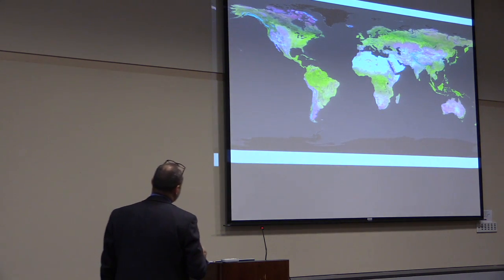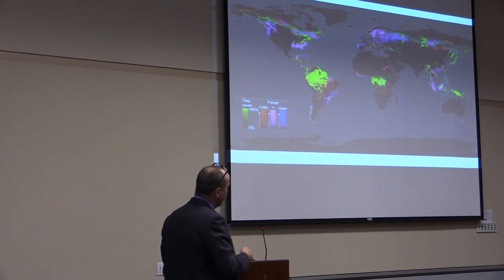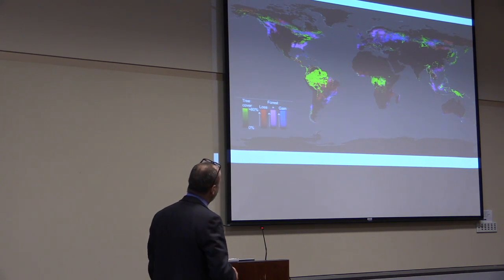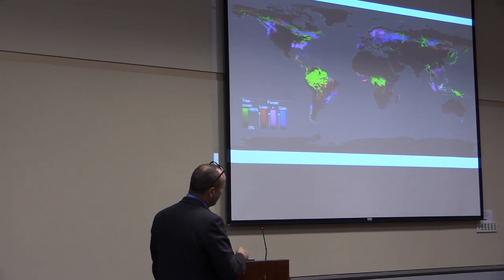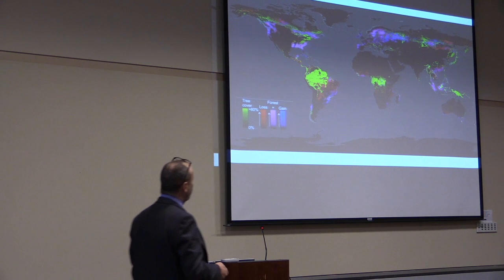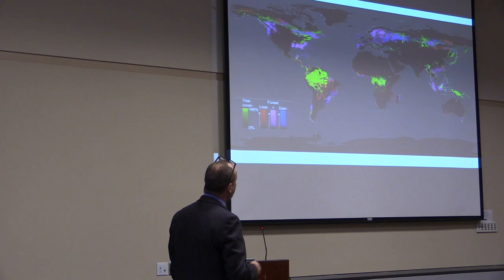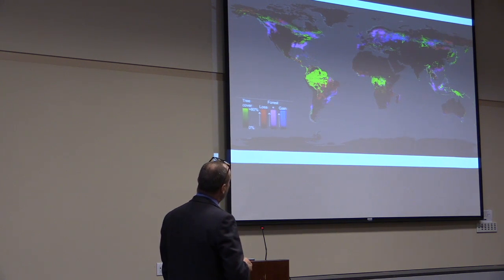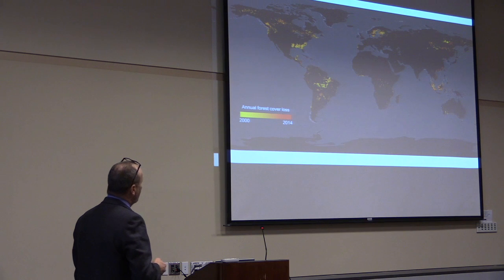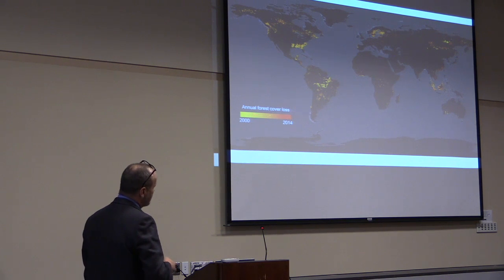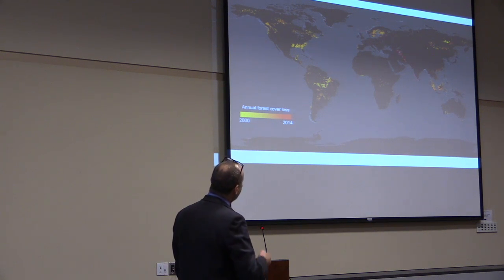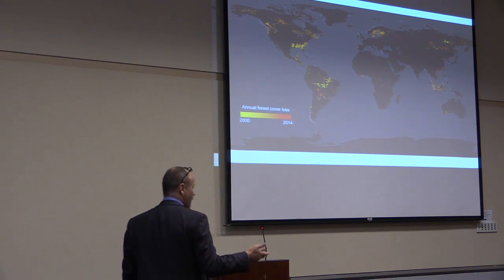Our first product was tree cover, loss, and gain. We're continuing to process that globally at 30 meters. We say that it's globally consistent but locally relevant. These simple themes — tree cover, loss, and gain — are not the full picture. People are interested in deforestation, in loss of peatland forest — very specific things. But in the big data context, it's very hard to take something like peatland forest loss to global scale.